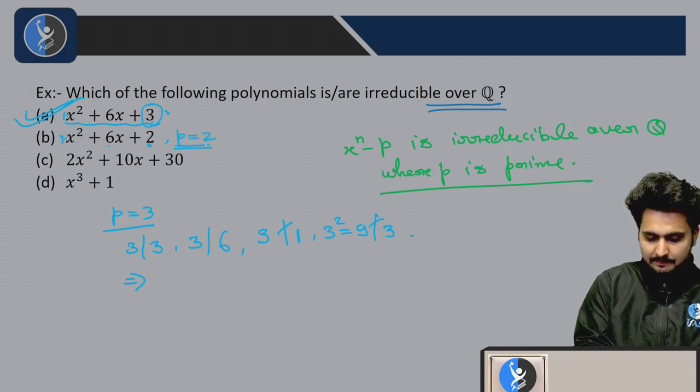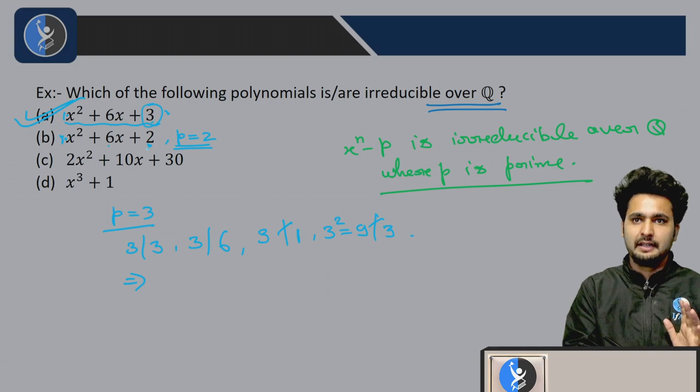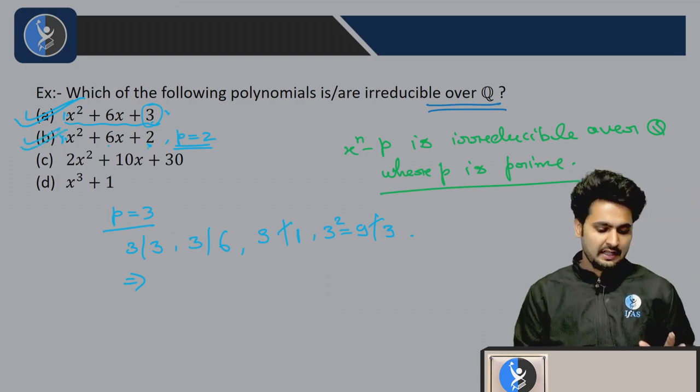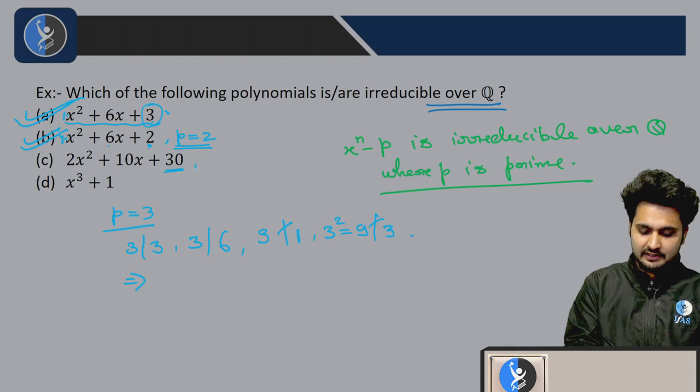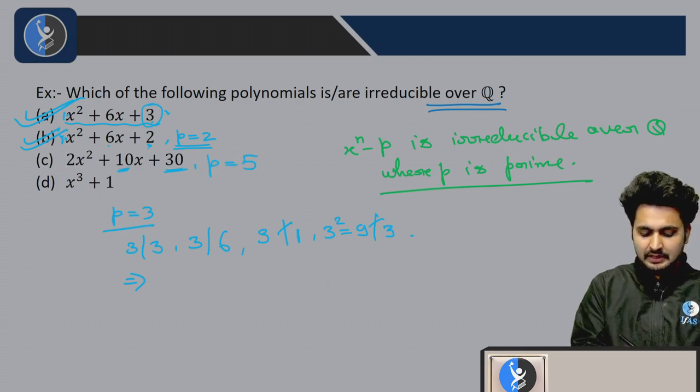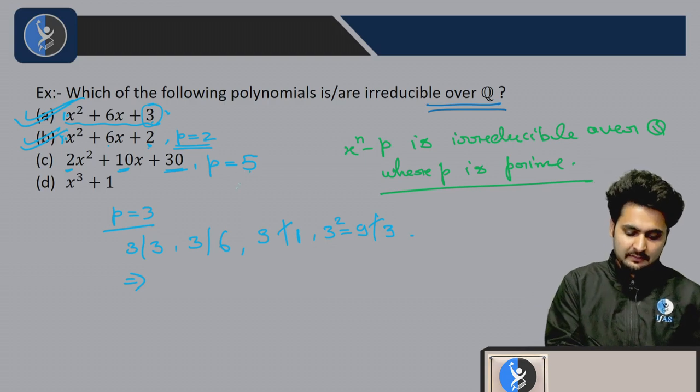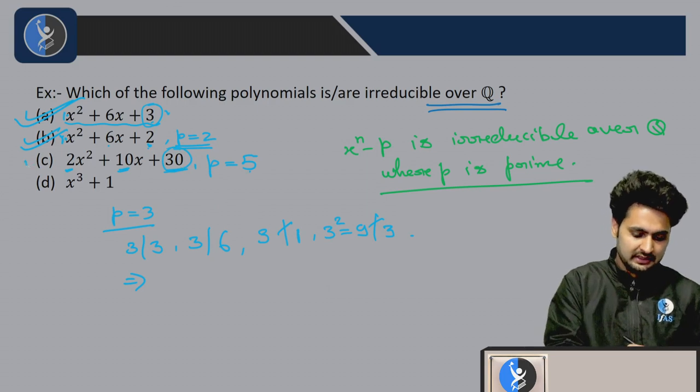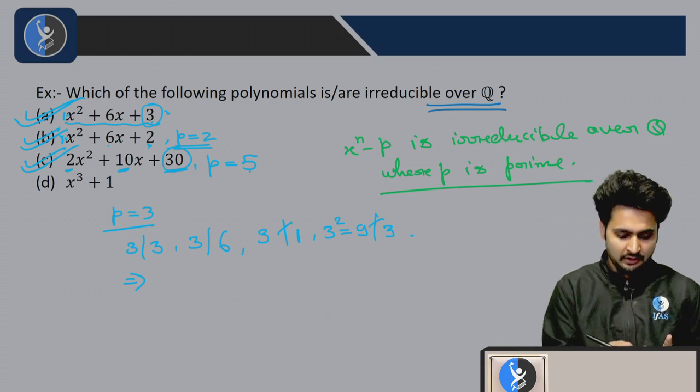p equals 5 also satisfies Eisenstein criterion, so this is also irreducible over Q. These three are irreducible over Q.